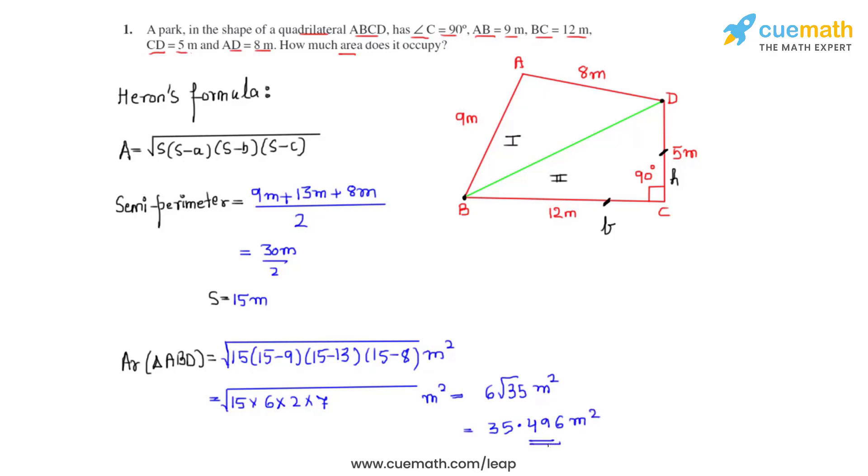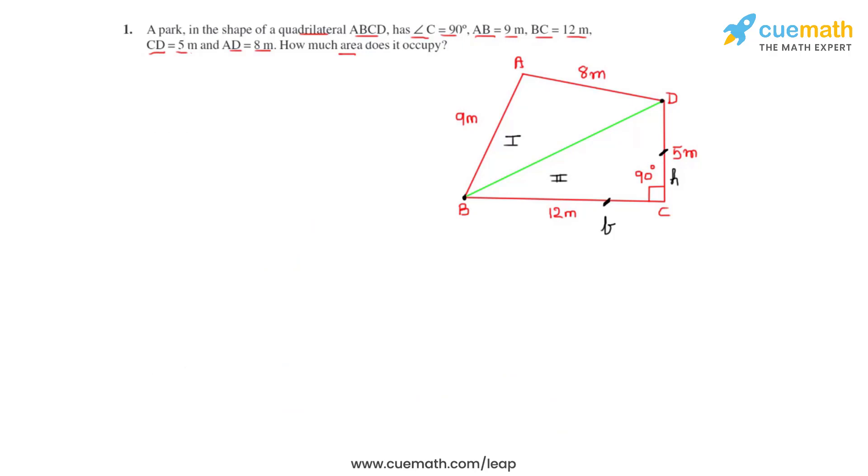Now that we have found the areas of the two triangles, the area of the quadrilateral can be found by summing up these two areas. So let's do that. Area of quadrilateral ABCD will be equal to the sum of the areas of triangle ABD plus area of triangle BCD.